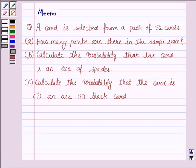Hello and welcome to the session. Let us discuss the following question. It says: a card is selected from a pack of 52 cards. How many points are there in the sample space? We calculate the probability that the card is an ace of spades. Calculate the probability that the card is an ace, and the black card.